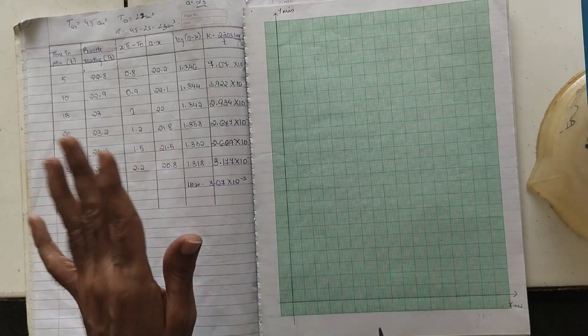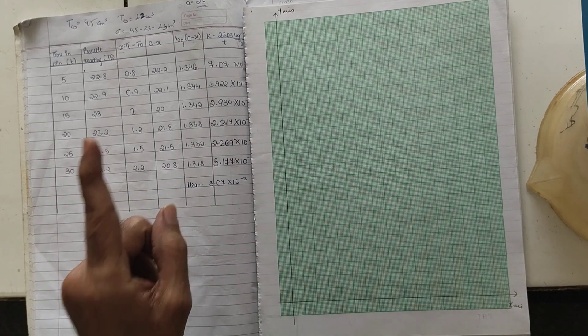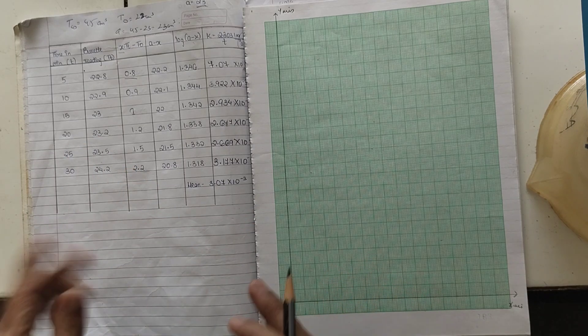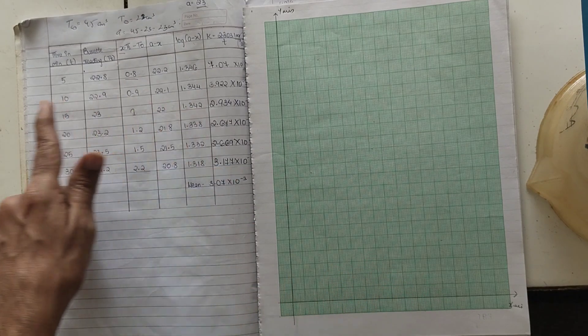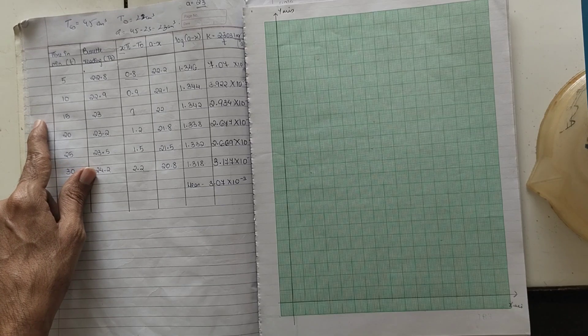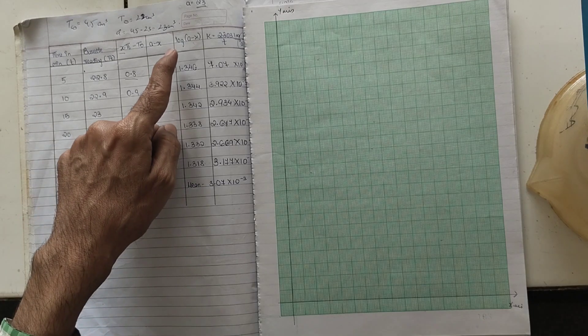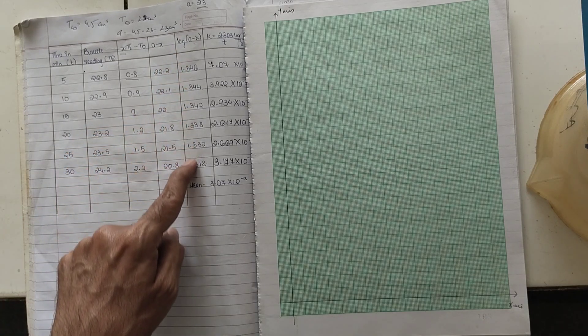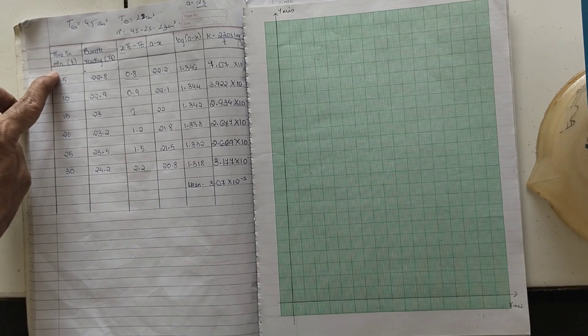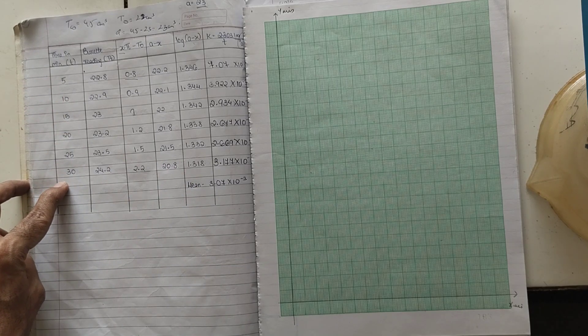The next thing is the nature of the graph is such it does not pass through the origin. If we can relate the values with that of time, we come to know that the log of A minus X value goes on decreasing with the increasing time, so it is inversely proportional.